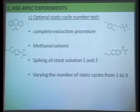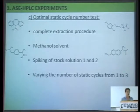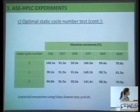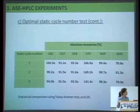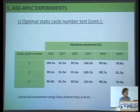The last test of the first stage was to determine the optimal static cycle number. We repeated with a stock solution of carbamazepine, gemfibrozil, ibuprofen, and naproxen — both anti-inflammatories — varying the number of static cycles from one to three. Results showed no significant difference for most pharmaceuticals, meaning even one cycle would likely be sufficient. However, we decided to keep two static cycles to ensure enough extraction time in our procedure.